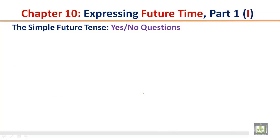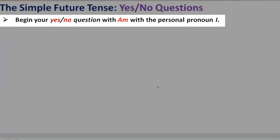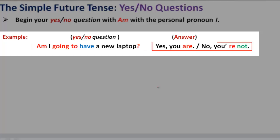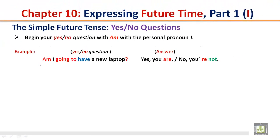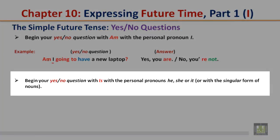The simple future tense — yes or no questions. Begin your yes or no question with Am with the personal pronoun I. Example: Am I going to have a new laptop? Answer: Yes, you are. No, you're not. Note: I is the personal pronoun — remember that. Begin your yes or no question with Is with the personal pronouns he, she, or it, or with the singular form of nouns.